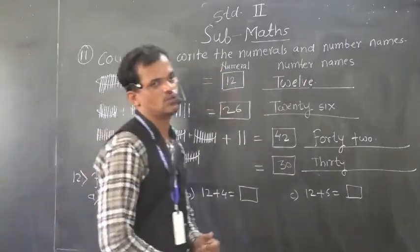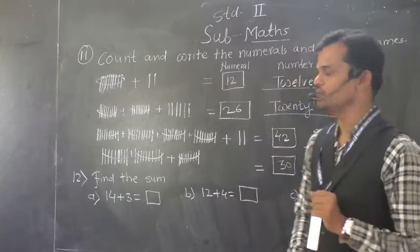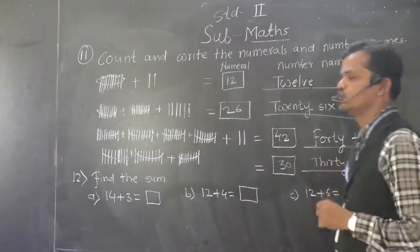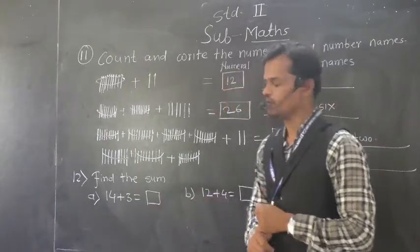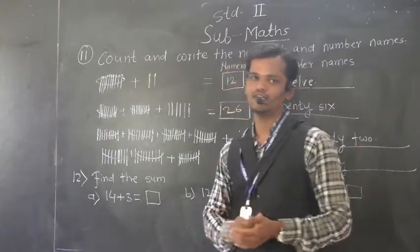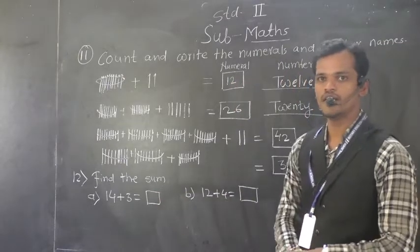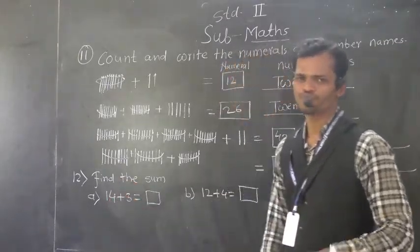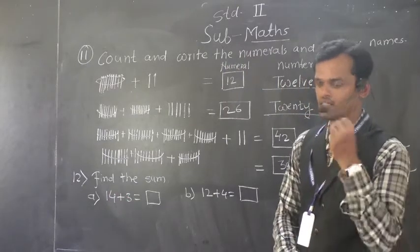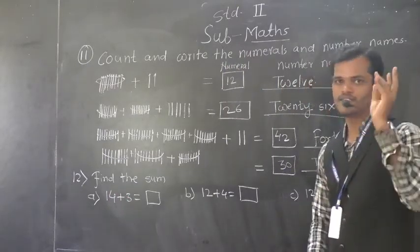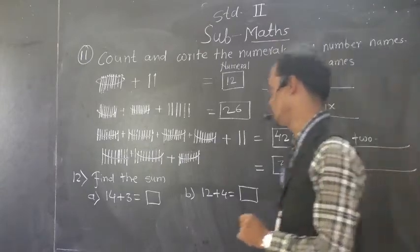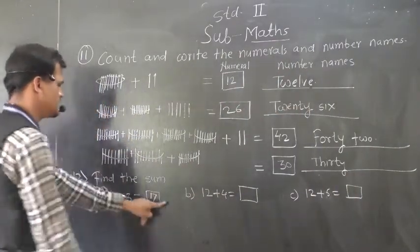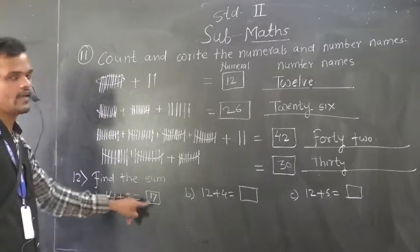Here, find the sum. So, you know that sum is the result of addition. So, here we have to do addition. 14 plus 3, this is the horizontal arrangement. So, after 14, we have to count forward by 3. So, 14 plus 3: 15, 16, 17.